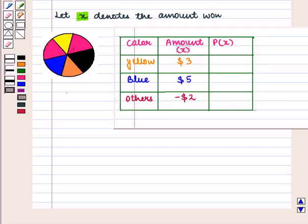Now, for yellow color, the probability will be given by 1 upon 6 as there is one sector showing yellow color and there are 6 sectors in all.